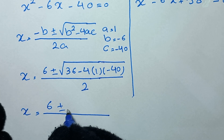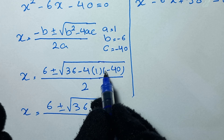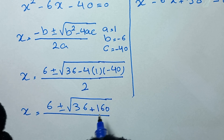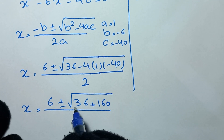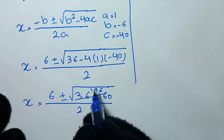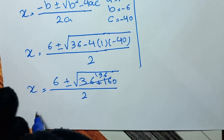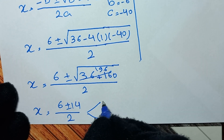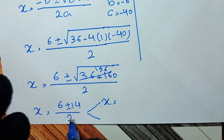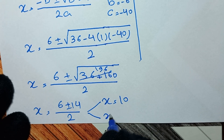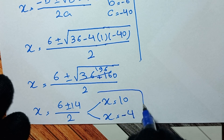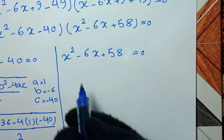We get x equals 6 plus or minus the square root of 36, and since negative times negative is positive, 4 times 1 times 40 is 160, giving 36 plus 160 equals 196, all over 2. The square root of 196 is 14, so x equals 6 plus or minus 14 over 2. This gives two answers: x equals (6 plus 14) over 2, which is 20 over 2, so x equals 10; and x equals (6 minus 14) over 2, which is negative 8 over 2, so x equals negative 4.